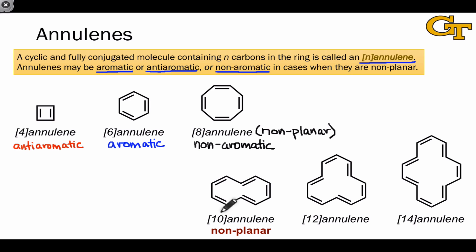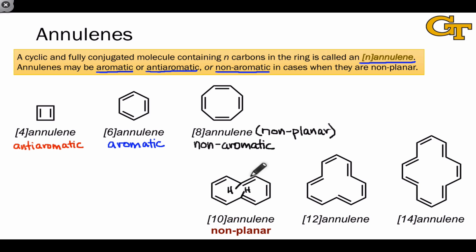This 10-annulene is in a similar situation — it would be aromatic since it has 10 pi electrons, but the molecule is non-planar. It's forced to be non-planar due to the orientations of these hydrogens, which would bump into each other severely in a fully planar structure. So the molecule must adopt a non-planar geometry. Examples of larger annulenes are also shown here: 12-annulene and 14-annulene.